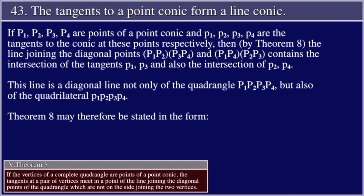This line is a diagonal line not only of the quadrangle P₁P₂P₃P₄, but also of the quadrilateral p₁p₂p₃p₄. Theorem 8 may therefore be stated in the form: